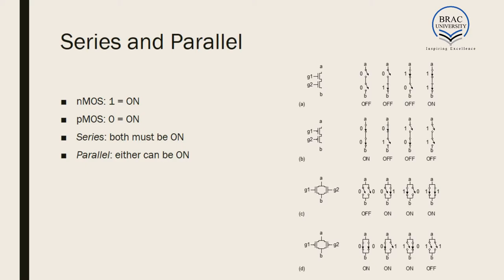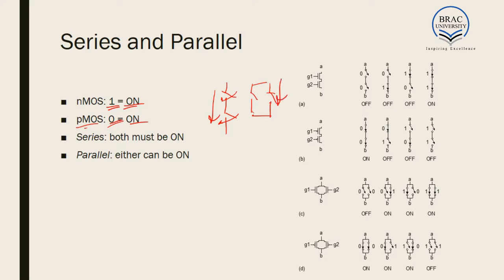What happens when the switches are in series and parallel? In case of NMOS, if the gate voltage is logic one, it is on; if the gate voltage is zero, it is off. In case of PMOS, the opposite happens — if the gate voltage is zero, it is on. For series switches, both will have to be turned on in order for current to flow. If they are in parallel, even if one of the switches is turned on, current can flow through it. So in parallel, either transistor must be on; in series, both transistors must be on for current to flow.